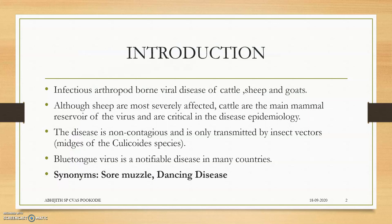Introduction: Blue Tongue is an infectious arthropod-borne viral disease of cattle, sheep, and goats. Although sheep are mostly affected, cattle is the main epidemiological agent and main mammal reservoir of this virus. The synonyms are sore muzzle — due to problems in the muzzle — and dancing disease, due to coronitis infection. Blue Tongue virus is a notifiable disease in many countries; it is OIE notifiable.